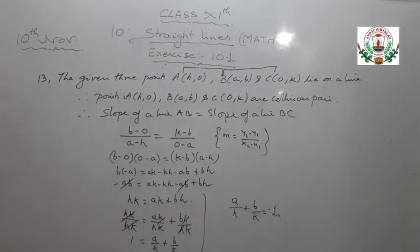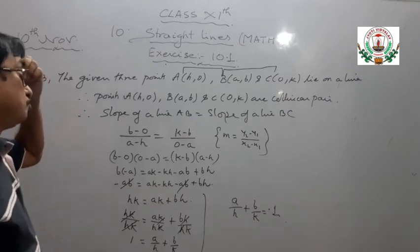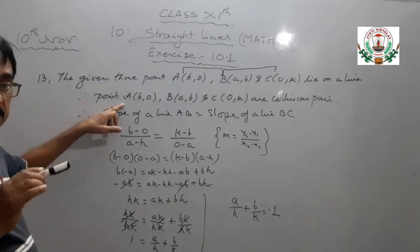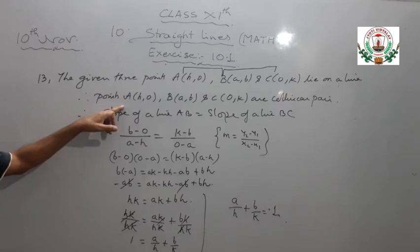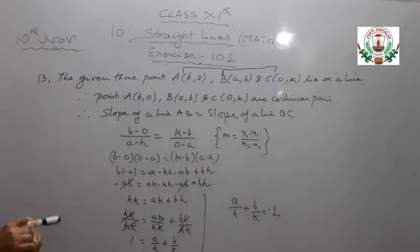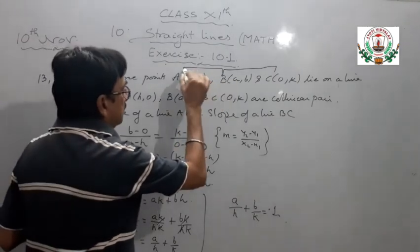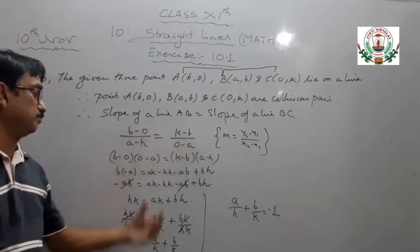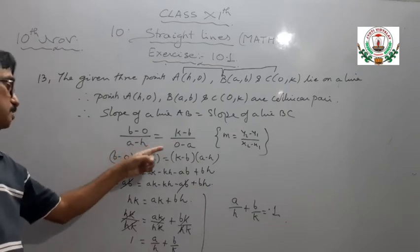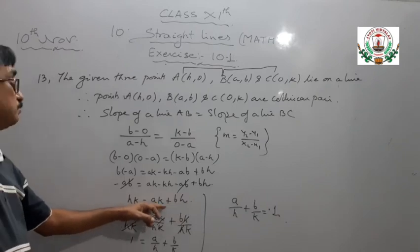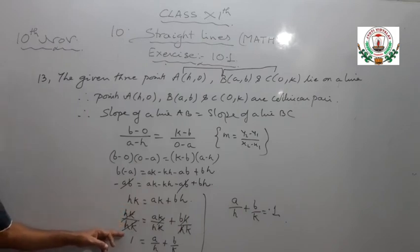The given three points A(H,0), B(A,B) and C(0,K) are collinear. Since they are collinear, slope of AB equals slope of BC using the formula Y2 minus Y1 upon X2 minus X1. After cross multiplication and simplification, HK equals AK plus BH. Dividing all terms by HK, we get A by H plus B by K equals 1.